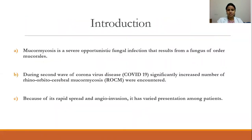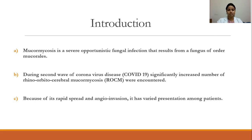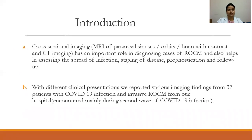Mucormycosis is a severe opportunistic fungal infection that results from a fungus of order Mucorales. During the second wave of COVID-19, a significantly increased number of rhino-orbito-cerebral mucormycosis cases were encountered. Because of its rapid spread and angioinvasion, it has varied presentation among patients. Cross-sectional imaging has an important role in diagnosing ROCM and helps in assessing the spread of infection, staging of disease, prognostication, and follow-up.